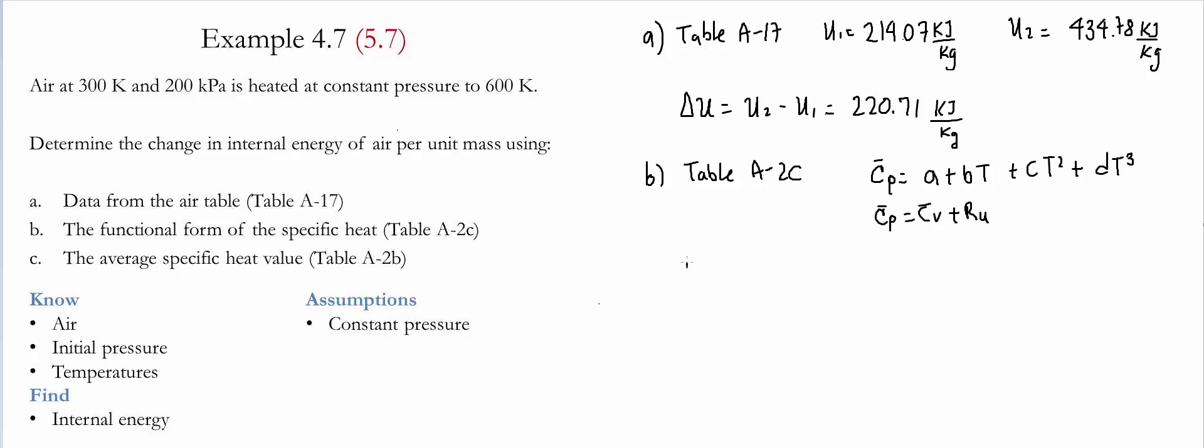We are able to find that the change of internal energy in a molar base is equal to the integral from 1 to 2 of Cv as a function of temperature. From this relationship, we find that Cv bar is simply Cp minus RU. Therefore, this integral becomes simply the integral of Cp bar minus RU dt.